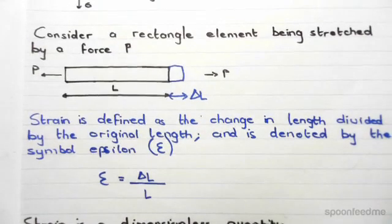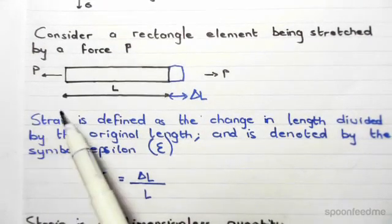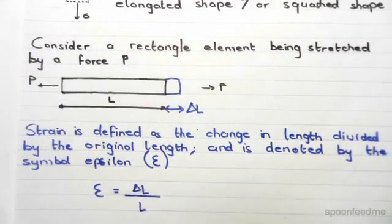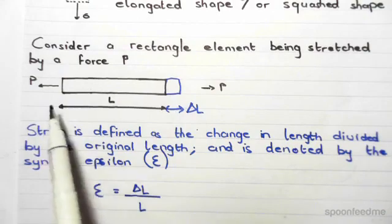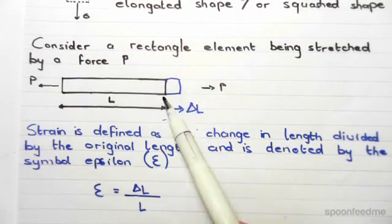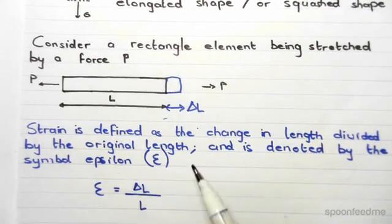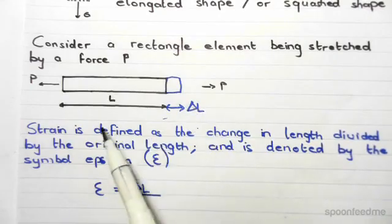So just going back and clarifying this, now assume we had the black rectangle. We put a tension force in the opposite direction on each side, P and P, and this blue region is the length which it stretched by, and therefore strain is the change in length, so delta L divided by original length.